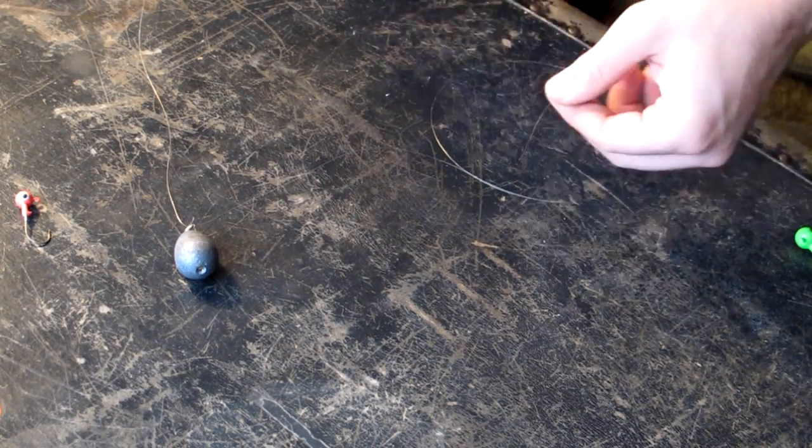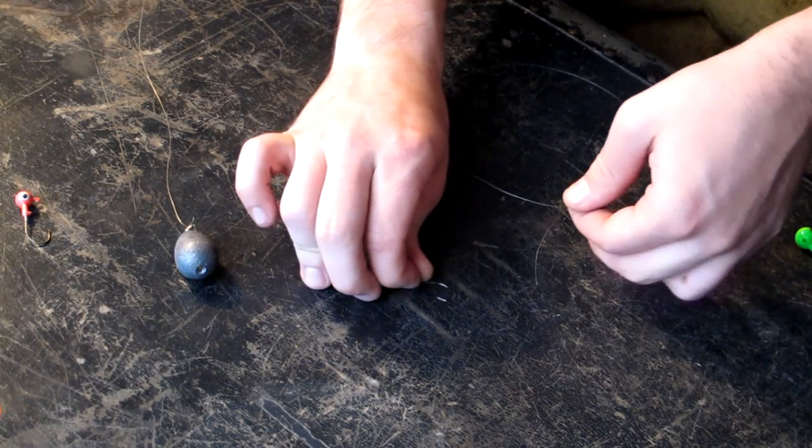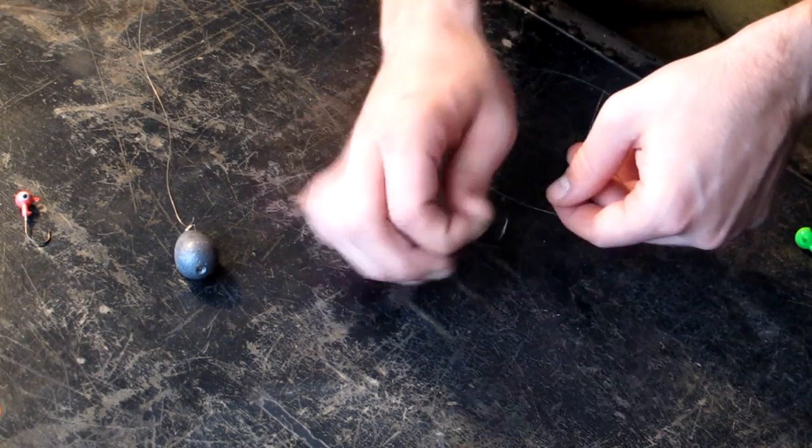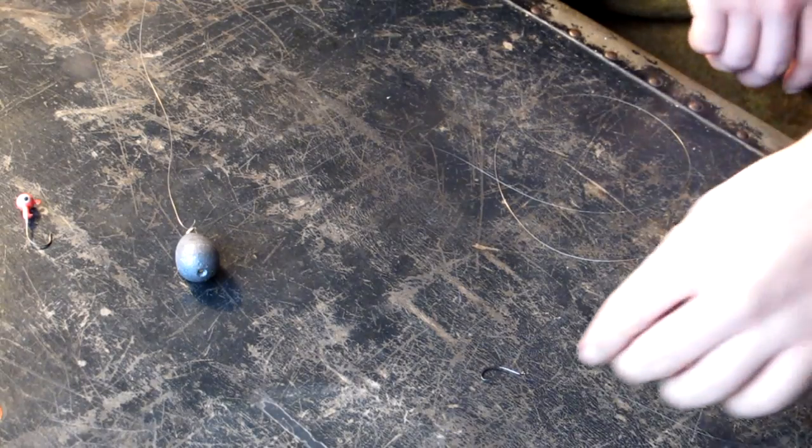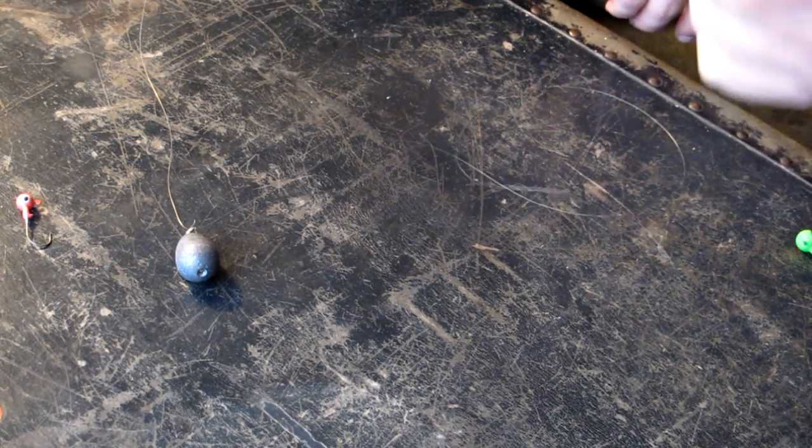Now the last step is to pick an appropriate size hook and tie your hook on to the smaller piece of line coming off from the weight. So, right here is my line. Here is my hook. Again, use whatever knot you would prefer and attach your hook. Alright, I have my hook attached. And now at this point, you would just load up your bait.